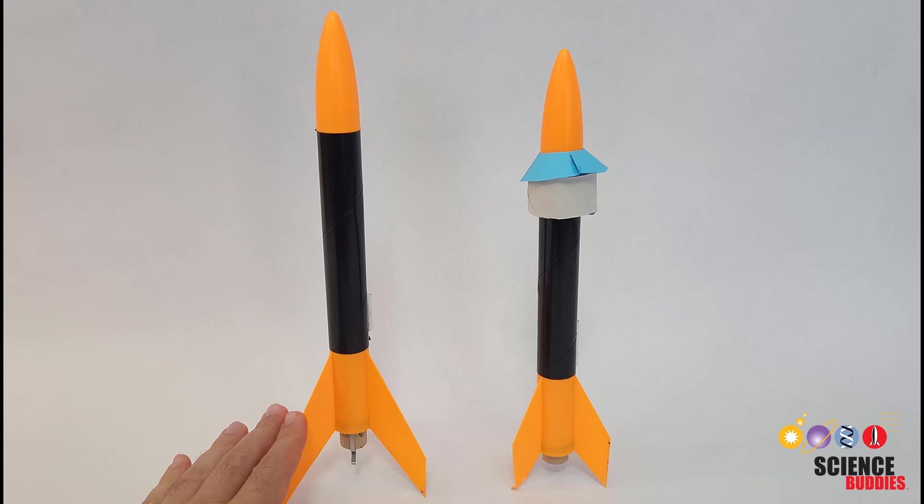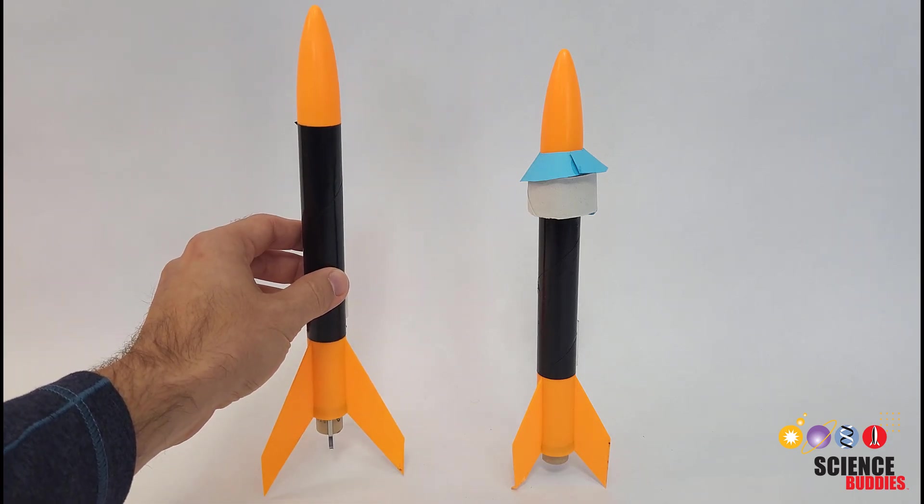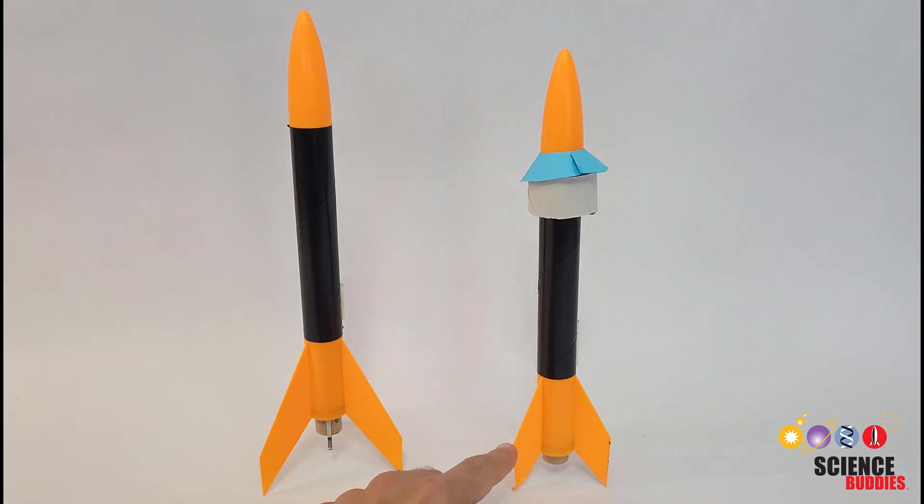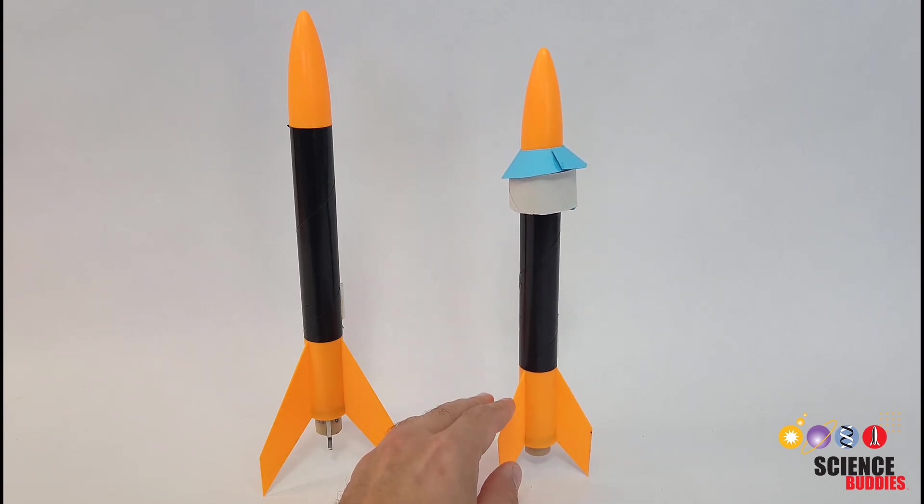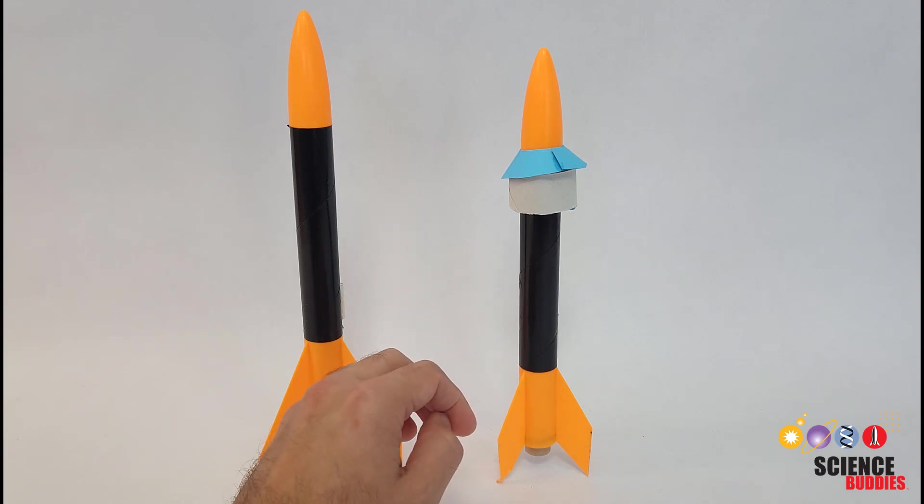On the left here, we have an unmodified model rocket made using the instructions and parts that came in the kit. On the right here, we have a modified version with a few changes. First, I trimmed down the tail fins to make them smaller. This removes surface area from the back of the rocket, shifting the center of pressure towards the front during ascending flight, but not so much that it makes the rocket unstable.